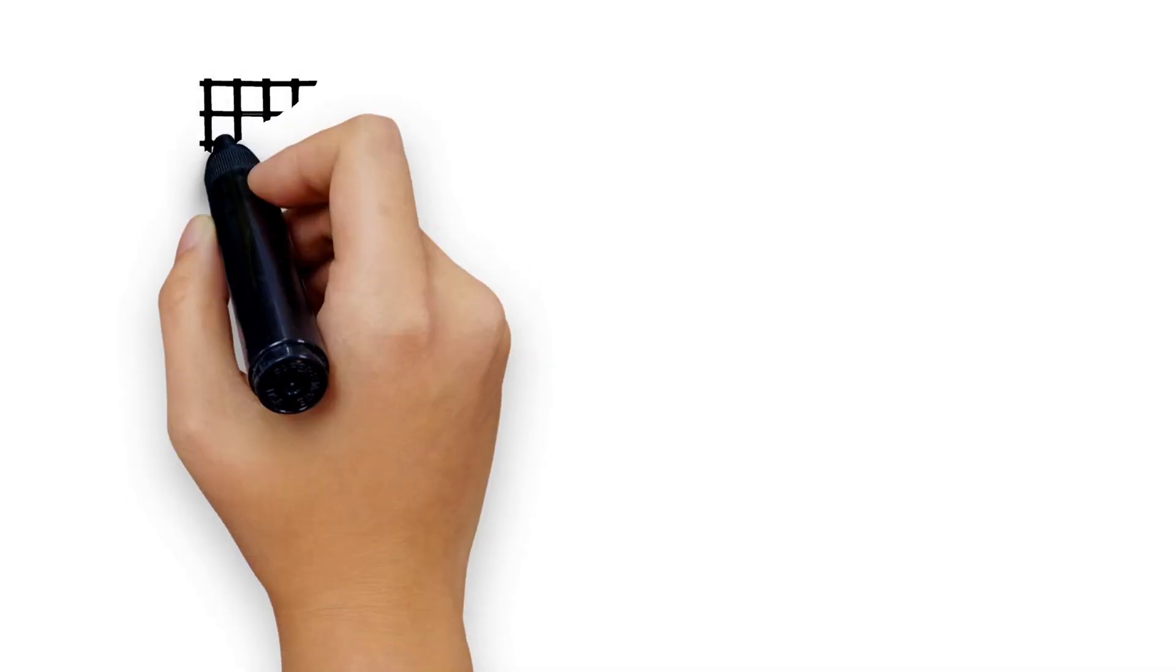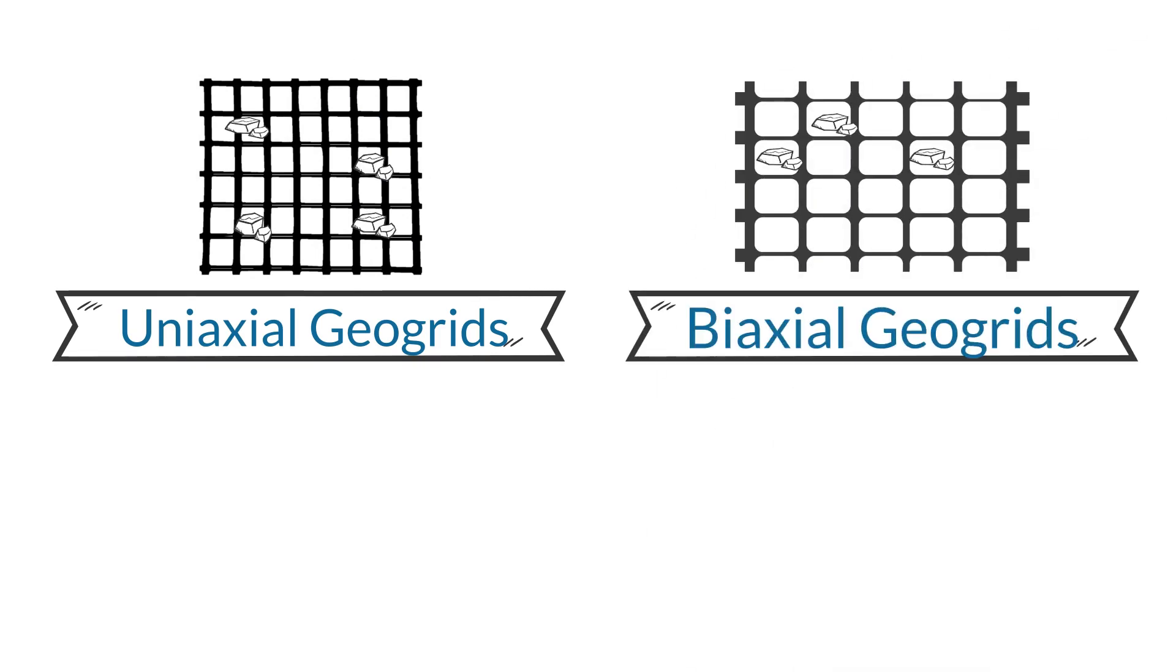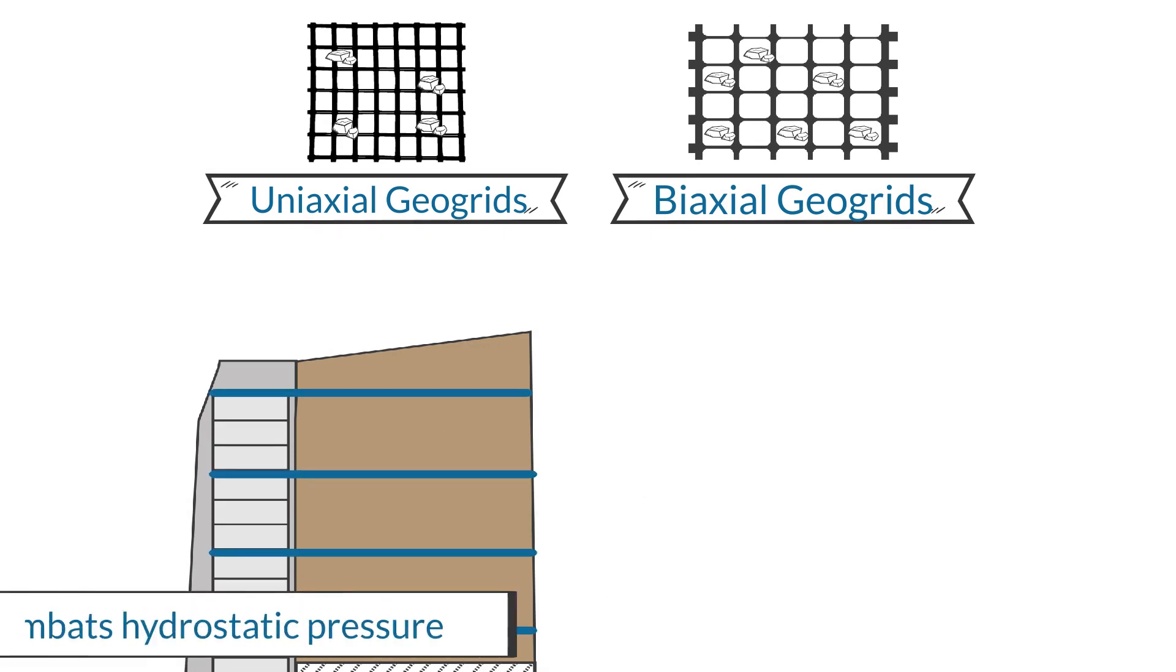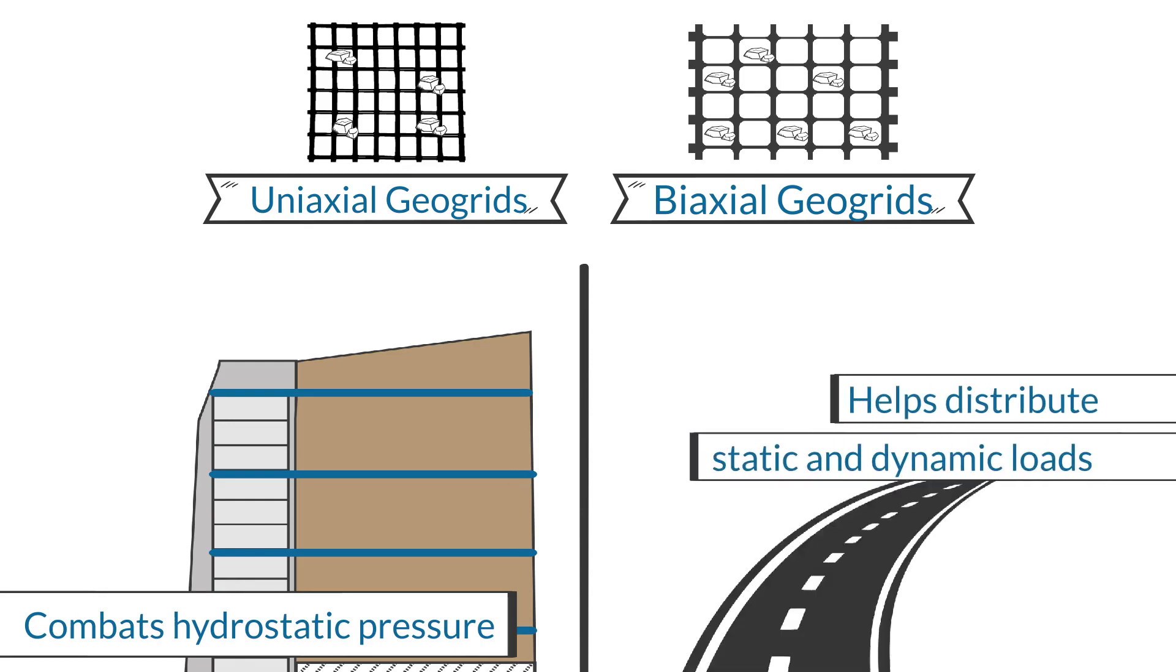Both geogrids work by holding or capturing the aggregates together in their mesh openings, improving the structural integrity of the aggregate fill. This means you can confine backfill in slopes and walls to help fight hydrostatic pressure or help distribute static and dynamic loads in roadways and other horizontal applications.